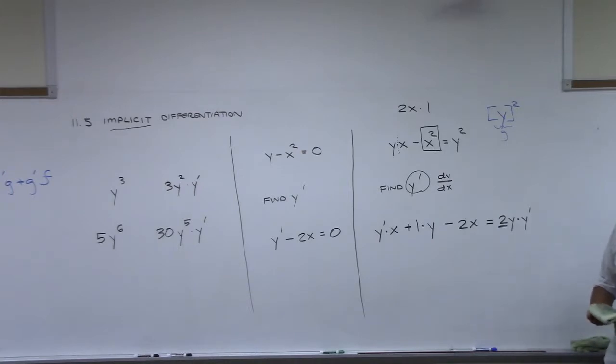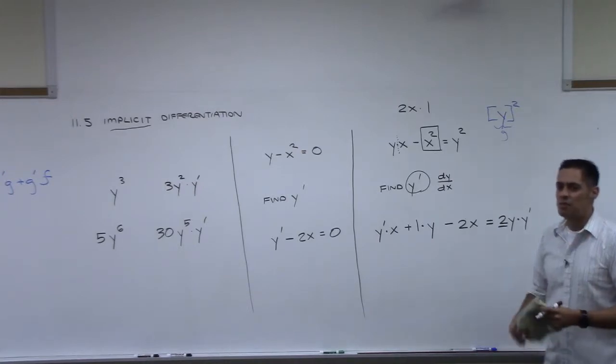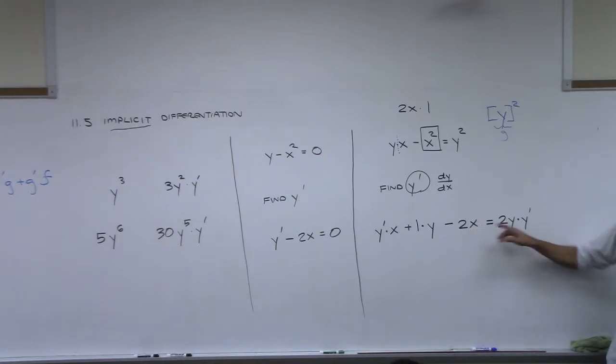Yeah, y is a function of x, and that is why the derivative of x is 1, but the derivative of y is y prime. Yeah, it is tricky.